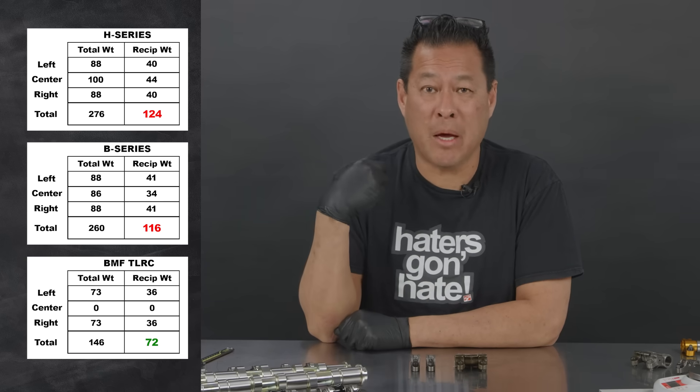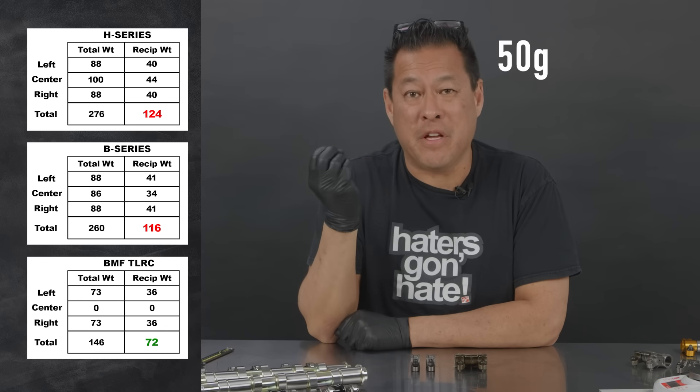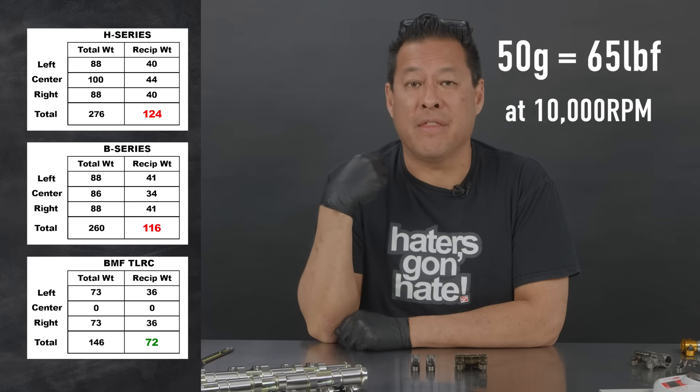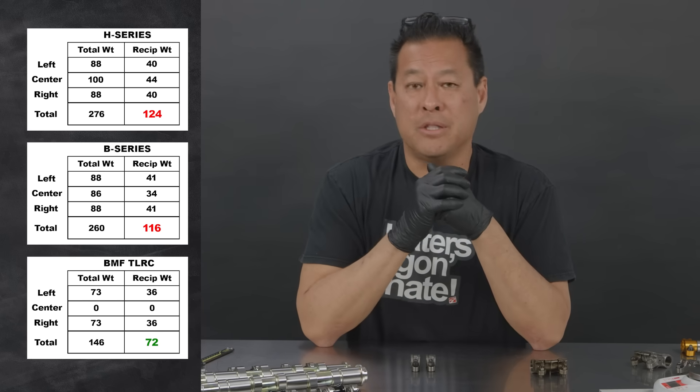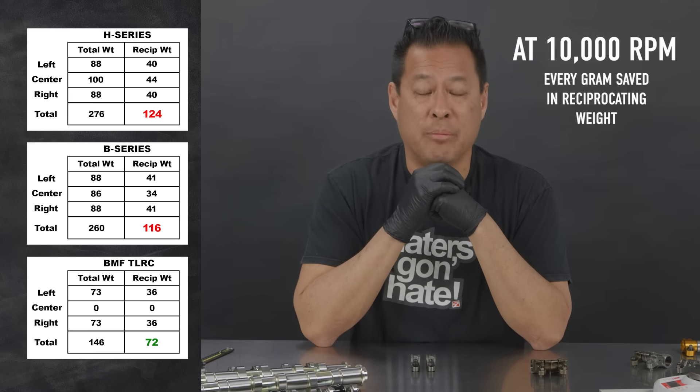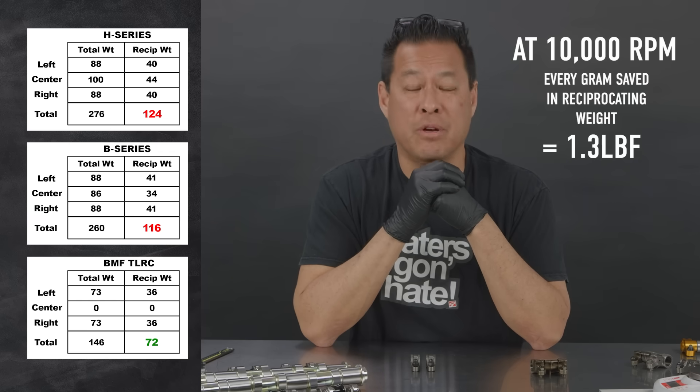What does 50 grams equate to at 10,000 RPM? I'll tell you that answer. 50 grams equals 65 pounds of force at 10,000 RPM. So if you want a little tidbit, at 10,000 RPMs every gram that you can save in reciprocating weight will equate to 1.3 pounds of force.